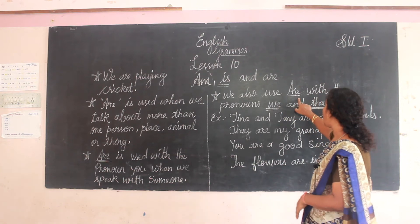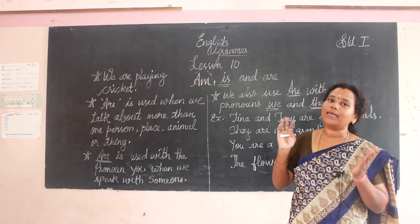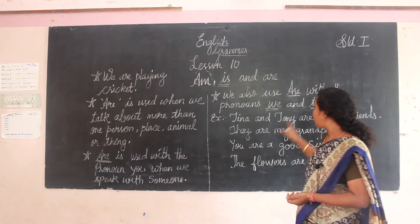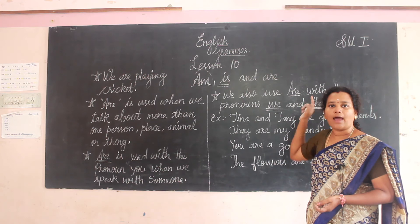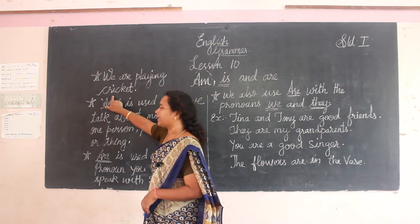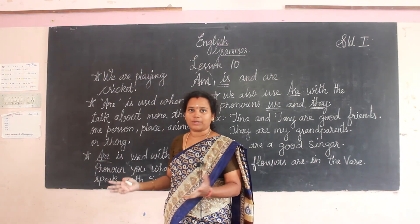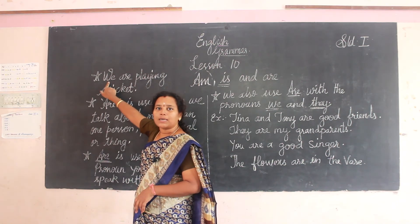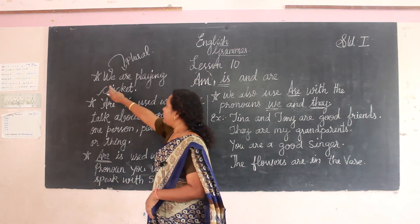Third condition: we also use 'are' with the pronouns 'we' and 'they', because they are plural. 'We' means all of us, 'they' means all of them. So 'we are playing cricket' — 'we' is plural, so we are adding 'are'. We are playing cricket.